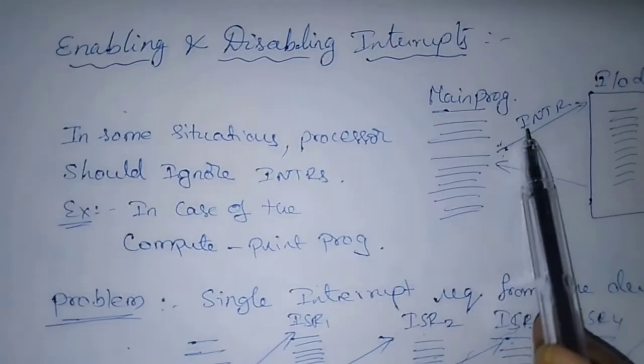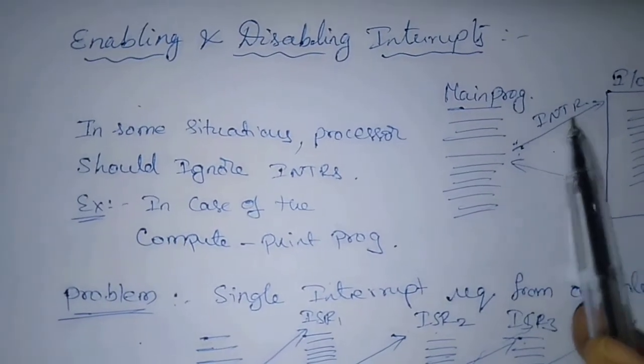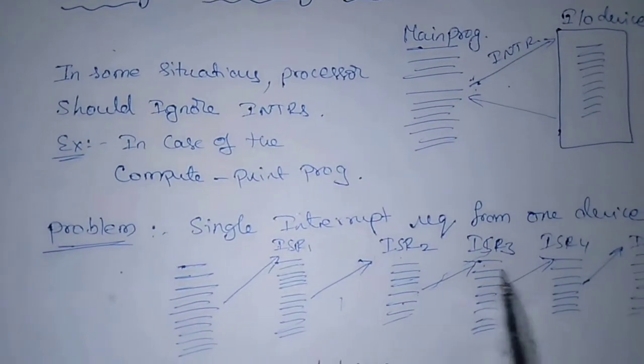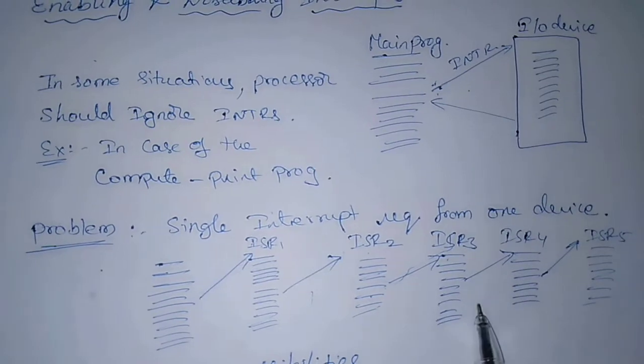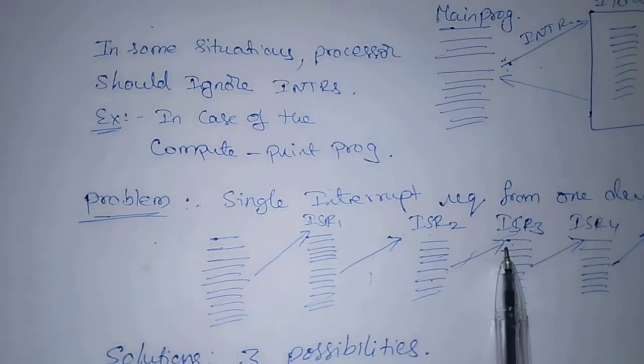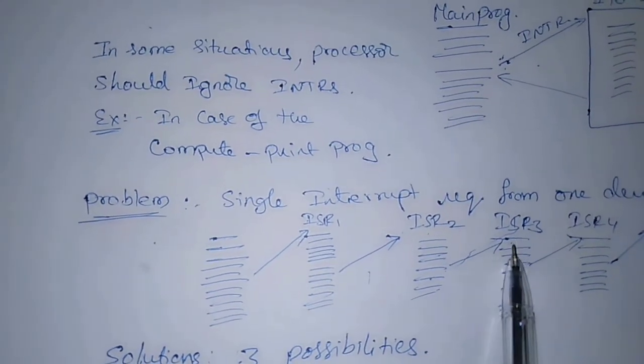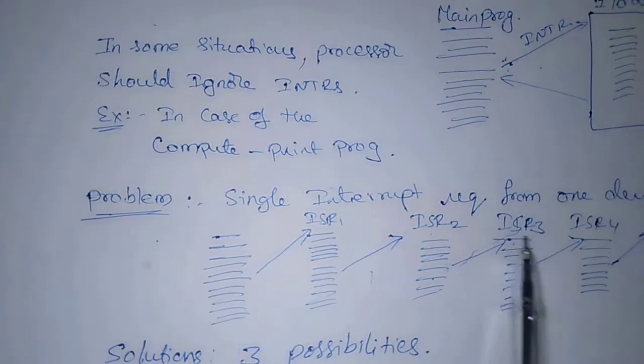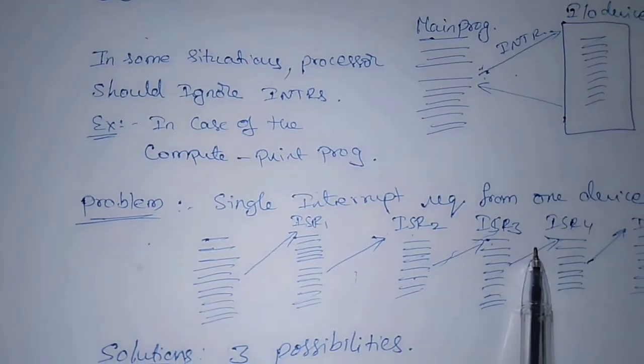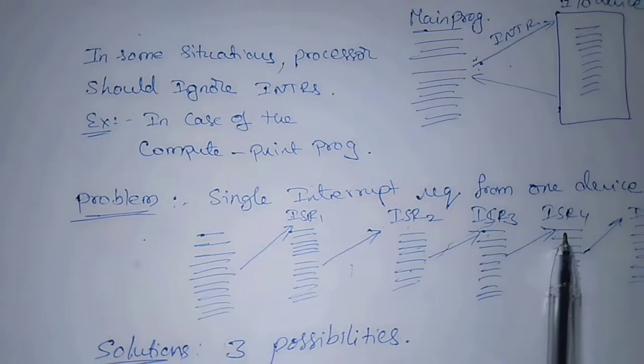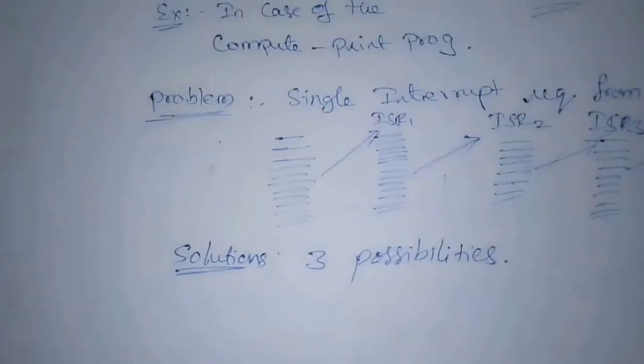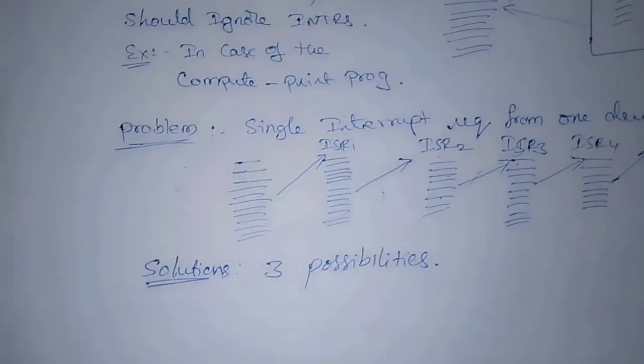Likewise, if the interrupt request signal is at 2 during the execution of the program, that's causing the system to enter an infinite loop from which it cannot recover. If interrupt request occurs, processor jumps to the corresponding ISR2 and then starts the execution of that ISR. And again, while executing this ISR, again, if the interrupt request is coming from another device, then stops the execution of current program and then jumps to the another ISR.